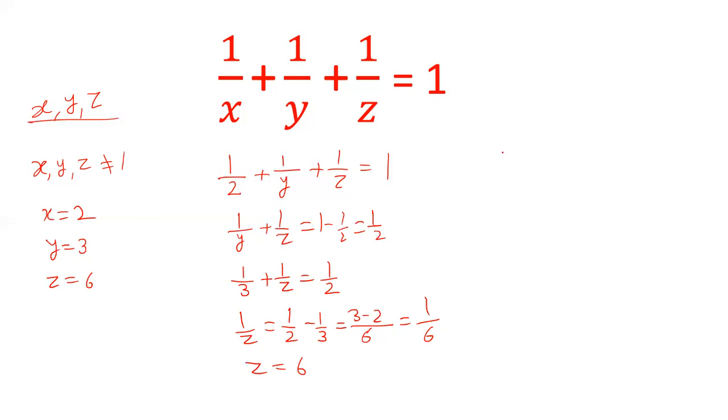So the minimum values of x, y, and z are 2, 3, and 6, and therefore the sum of x + y + z will be 2 + 3 + 6, that is 11.